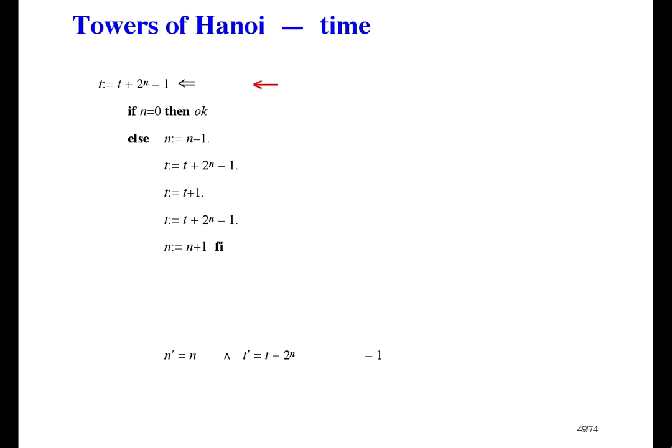That proves the execution time is two to the n minus one. And, it means, don't play the game with more than about six or seven disks. The original story said that in Hanoi, there are these three towers with 64 disks. And, the monks started moving them at the beginning of time. And, when they're done, it's the end of time. I think they got that about right.